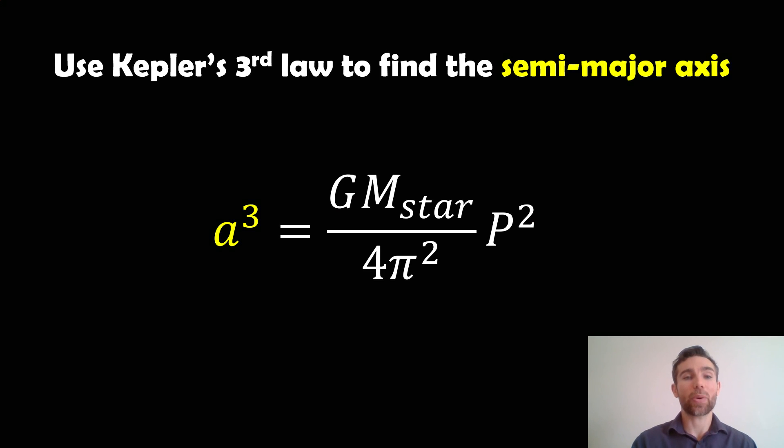Now how do we actually calculate the value for that semi-major axis? Well if you know the orbital period and the mass of that central large object, so in this case here the star or the sun, then you can use Kepler's third law. So Kepler's third law states that the cube of the semi-major axis, which is a here on the left hand side in yellow, is proportional to the square of the orbital period, which is p. And if you know the mass and those other constants, you can then calculate an actual value for the semi-major axis.